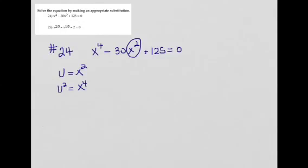Now my new equation is u squared minus 30u plus 125 equals 0. I have a quadratic equation that I can factor, or I could use the quadratic formula. Either way is fine.